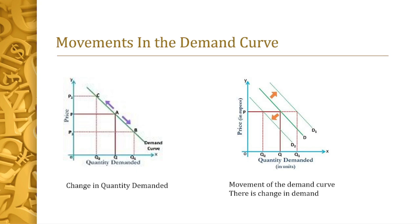However, in December there are a lot of people who have money because that's when bonuses come in, and there are many ninongs and ninangs who want to purchase gifts for their loved ones. So there is an increase in demand — instead of the usual 20,000 units sold, it could sell around 30,000 units at the same price of 100,000 pesos per unit. This is a movement — a change in demand — when price is constant.